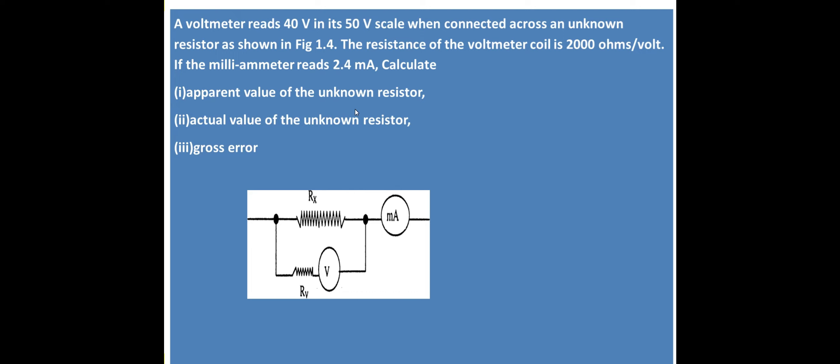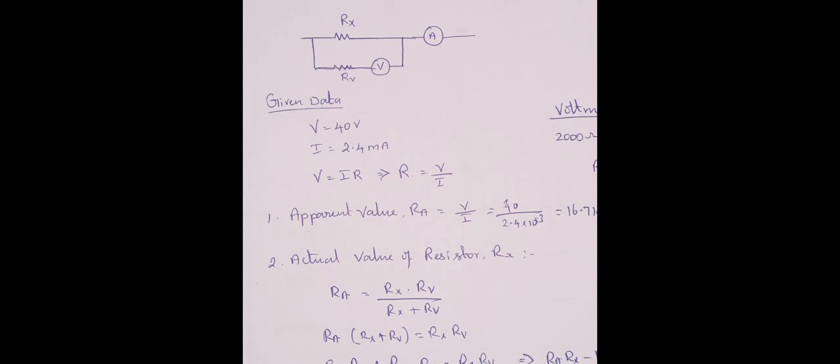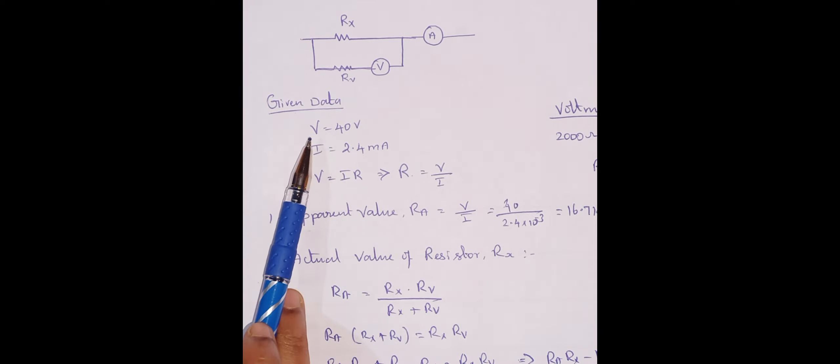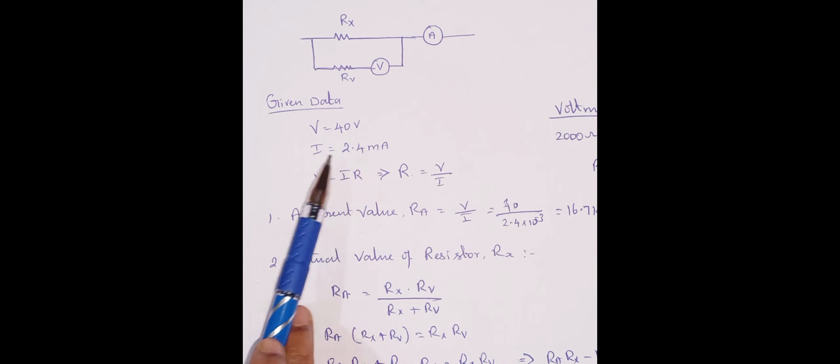So apparent value is nothing but it looks like the actual value but it is not actual value. In this given problem, voltmeter reading is 40 volts, ammeter reading is 2.4 milliamps, that is the current value. We know V is equal to IR, correct? So using this combination if you find out resistance, this is called apparent value.